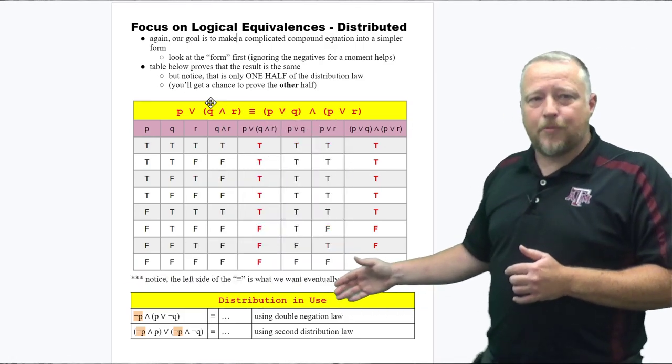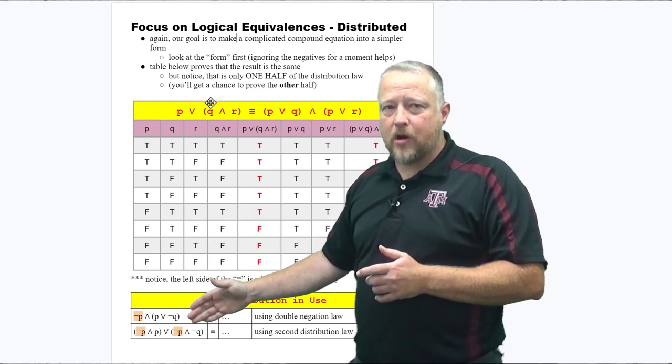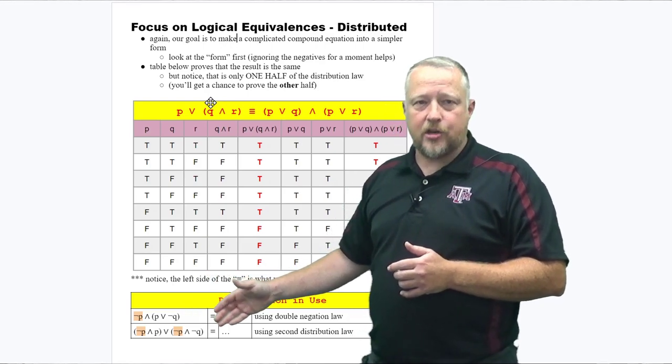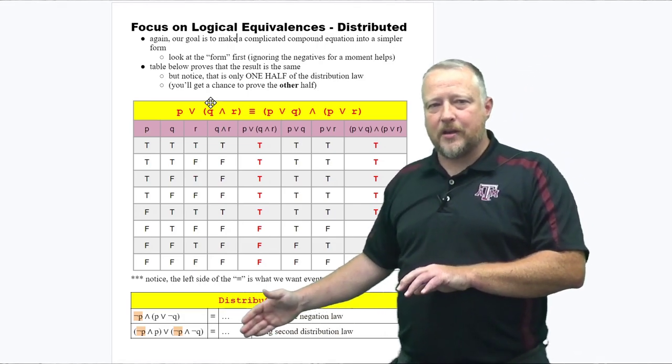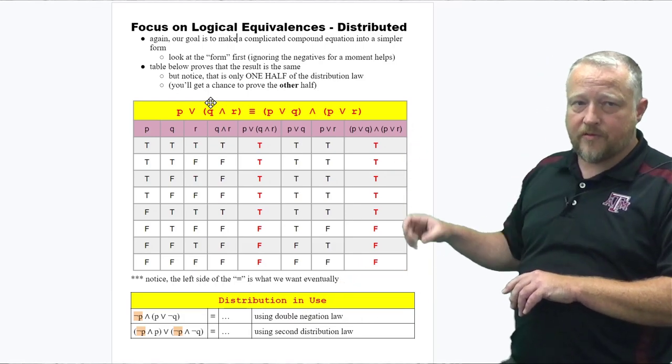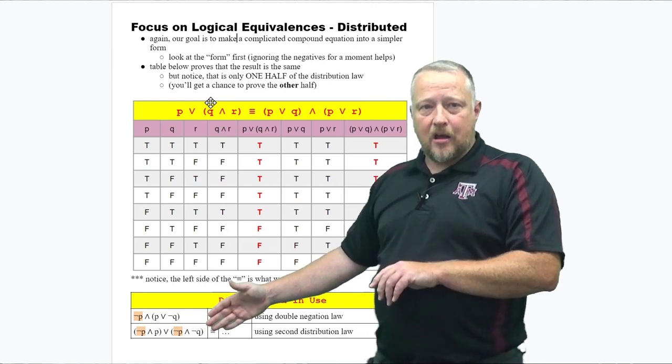In this example, I have an equation I've been working on, and I've gotten to this point where I have a negated p and a p or a negated q. I kind of feel like I'm stuck, but in reality I'm going to use our second distributed law.